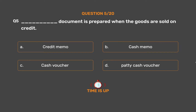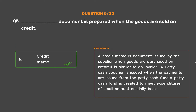The correct answer is option A: credit memo. A credit memo is a document issued by the supplier when goods are purchased on credit. It is similar to an invoice. A petty cash voucher is issued when payments are made from the petty cash fund. A petty cash fund is created to meet expenditures of small amounts on a daily basis.